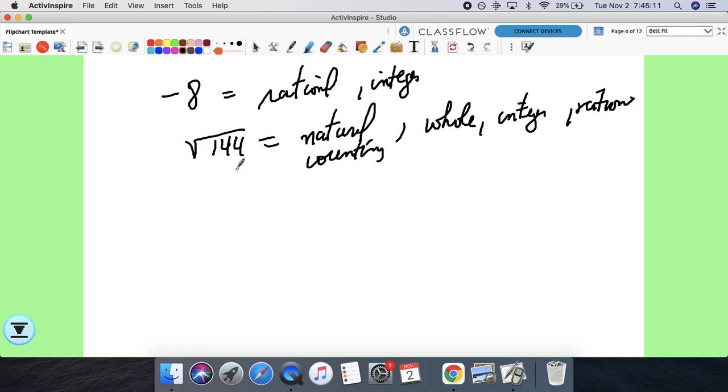Square root of 44 is a natural or counting number, however you want to call it. It's a whole number, integer, and rational, right, because square root of 44 is the same thing as 12. 4 over 7 is just rational. You don't have to write real, it's just rational. And then square root of 21, it's going to be a non-repeating, non-terminating decimal, so that makes it irrational.